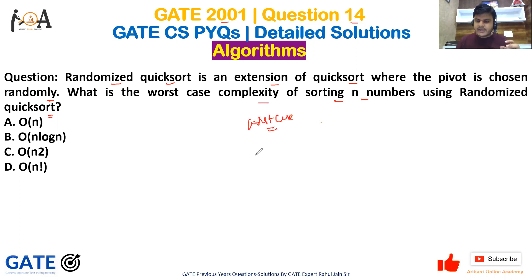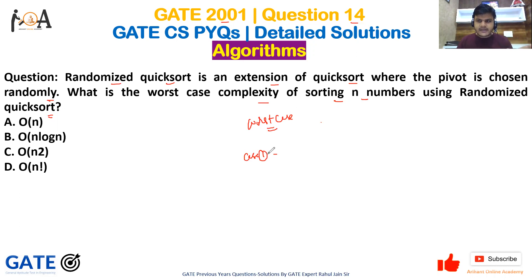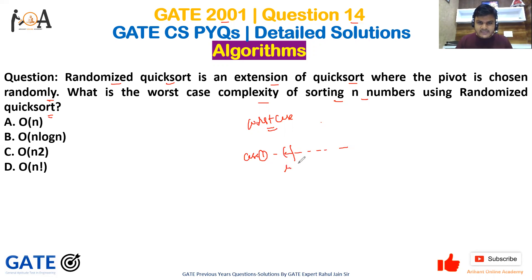In the worst case, we can consider two cases. Case one: suppose we have all the elements similar. Every time we pivot the element, it ends up entirely on one side — for example, every time the pivot goes to the left side, we have zero elements on the left and n minus one elements on the right.